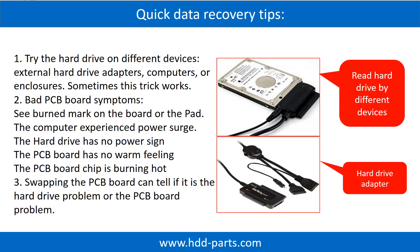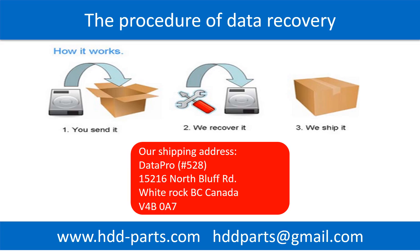There are some simple ways to recover data from a hard drive. One is to try reading the hard drive by different devices, like different external hard drive adapters, computers, or enclosures, because different devices use different methods to read a hard drive — sometimes this trick works. Another way is swapping the hard drive PCB board, which can fix problems caused by the PCB board. There is a cost in swapping the PCB board, but it is way cheaper than sending the hard drive to a data recovery firm. Our data recovery procedure: first, the client sends their hard drive to us; second, we do data recovery; third, we ship the data back to our clients.